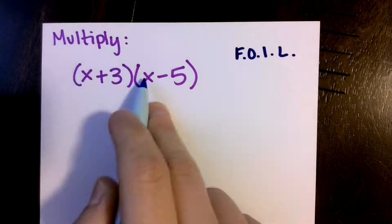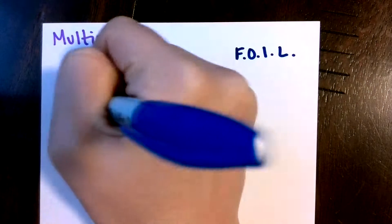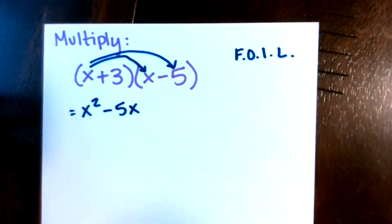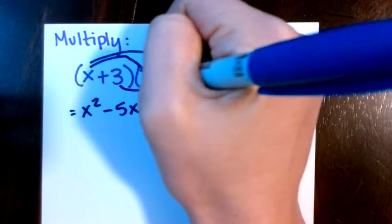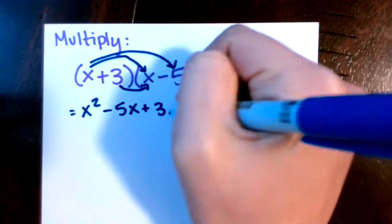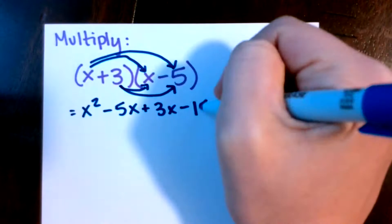So we're saying we've got x times x, which is x squared. We could do arrows if you want to, if that makes it clear. And x times negative 5. And then we have to distribute the 3. So we get a 3x and a negative 15.